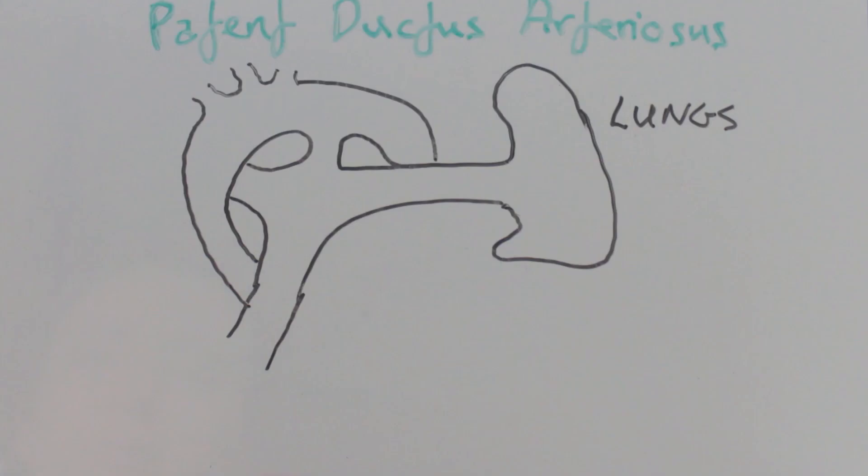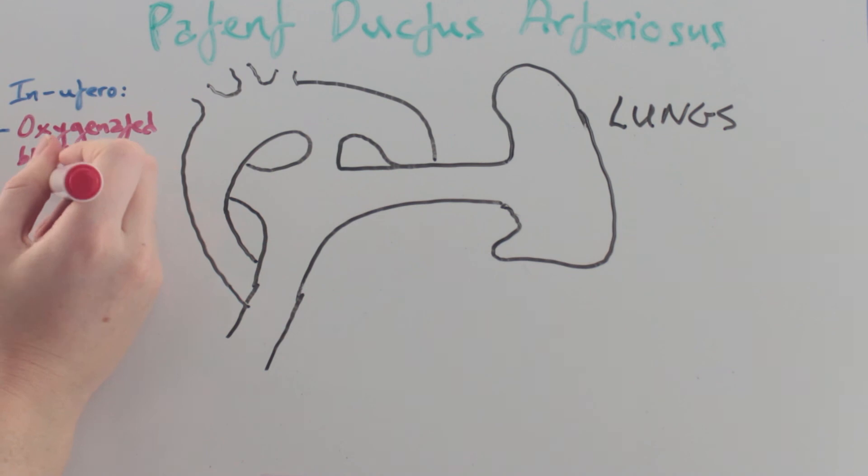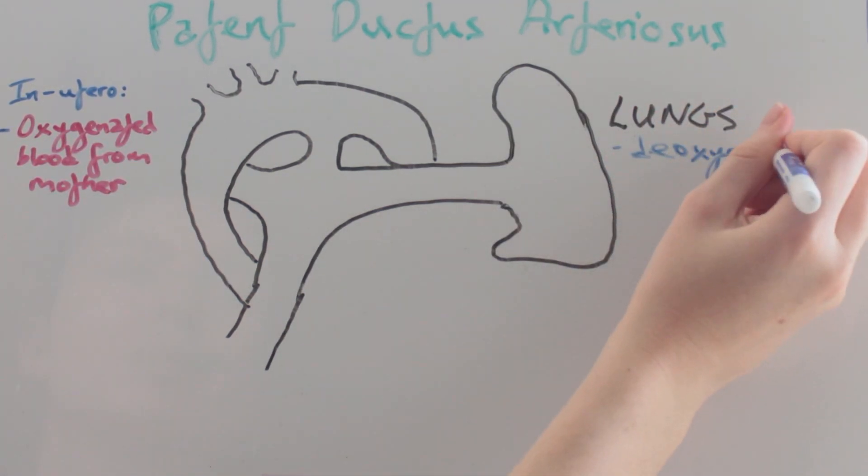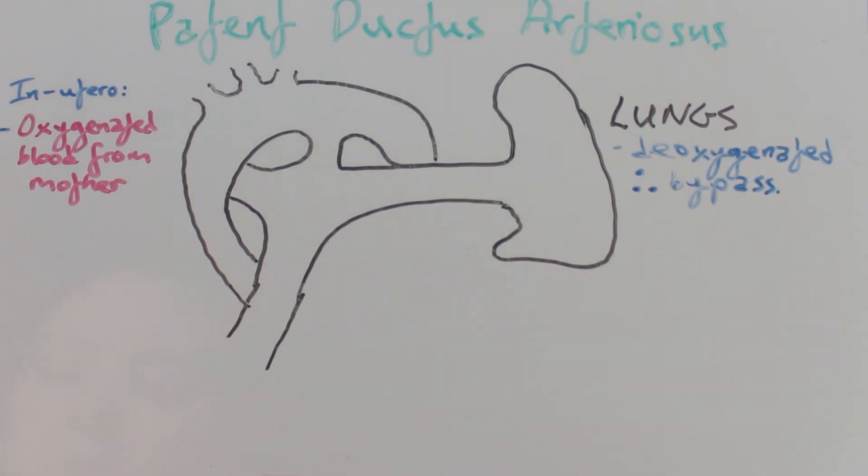Today we're going to be talking about a congenital heart disease called patent ductus arteriosus. First let's take a look at the fetal circulation. In utero the fetus gets oxygenated blood from the mother. This is because the fetal lungs are deoxygenated and therefore can for the most part be bypassed.